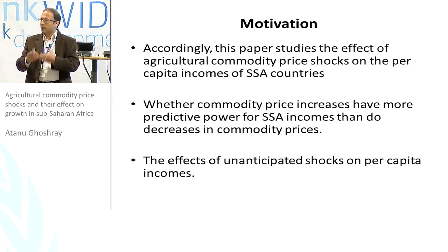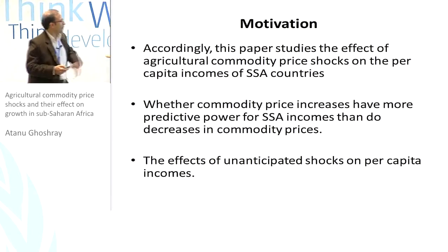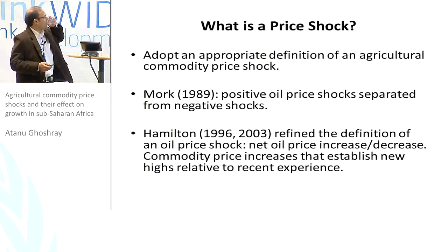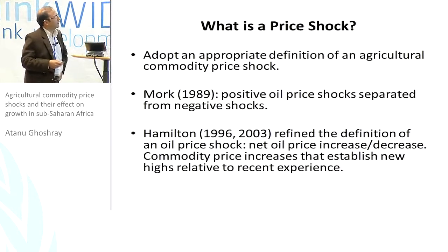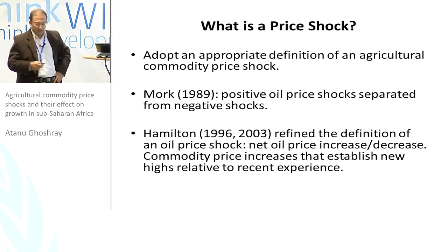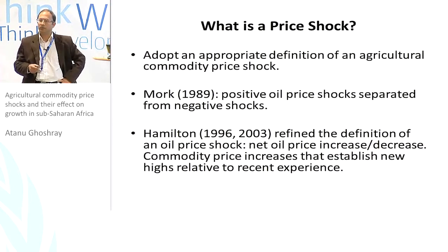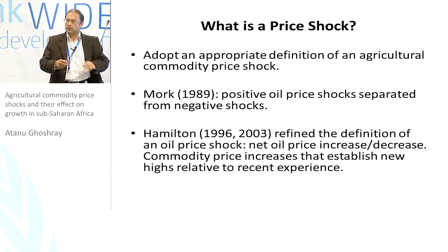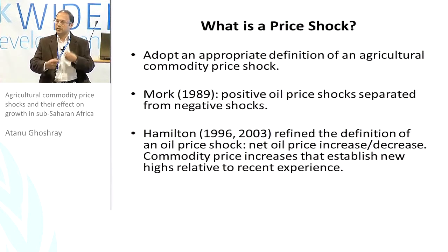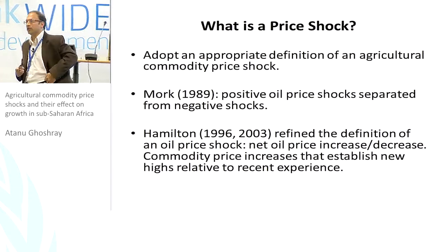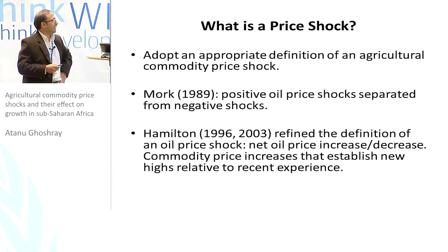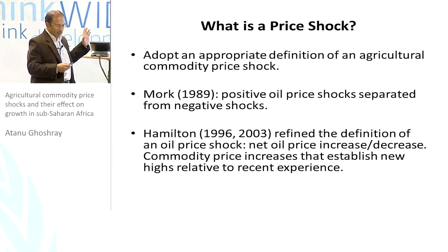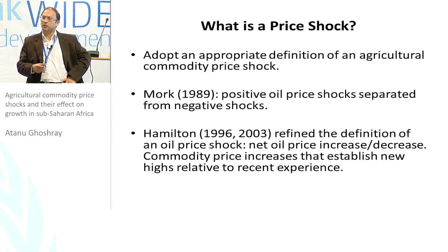We look at a five-year horizon to find out whether there's any difference between positive and negative shocks. In the literature, two types of price shocks have been used for oil prices. One was provided by Mork in 1989, published in the Journal of Political Economy, where he divides oil price movements into positive and negative and traces out their effect on the US economy. Mork finds that positive oil price movements tend to have a larger impact than negative ones, and this model has become quite popular in the literature on commodity price movements.